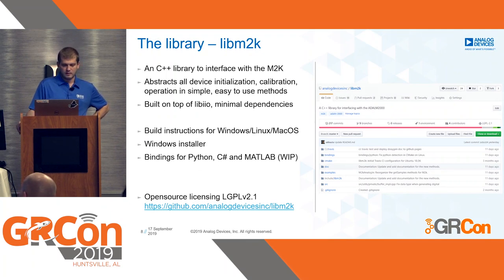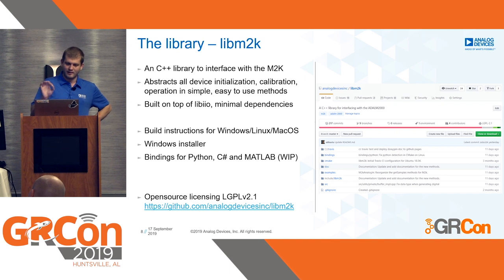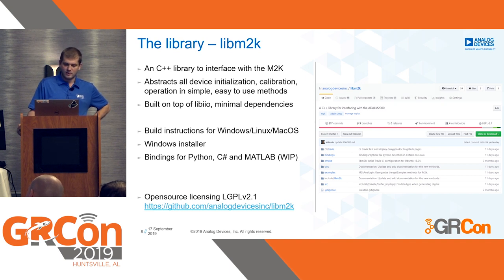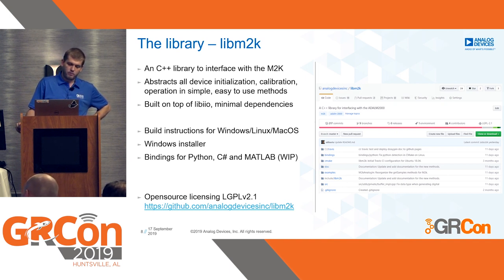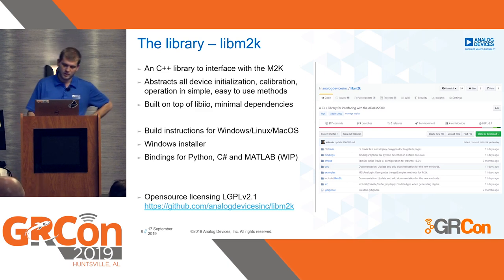The library is called LibM2K. It is a C++ library to interface with the M2K. In IIO, there are lots of switches and knobs that need to be in the perfect order for things to work, but LibM2K abstracts all the device initialization, calibration, and operation into easy-to-use methods. It is built on top of LibIIO and has a minimal set of dependencies. We provide build instructions for Windows, Linux, and macOS, plus a Windows installer because building on Windows can be hard. We also created Python bindings, C# bindings, and MATLAB bindings for LibM2K — all open source under the LGPL license.